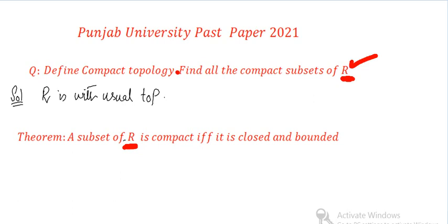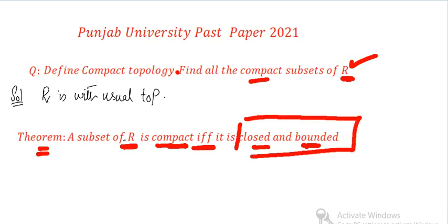It is not possible to check every subset individually, because checking every subset for compactness in an infinite set is not feasible. So we need to set some criteria. This theorem helps us: a subset of R with the usual topology is compact if and only if it is closed and bounded.